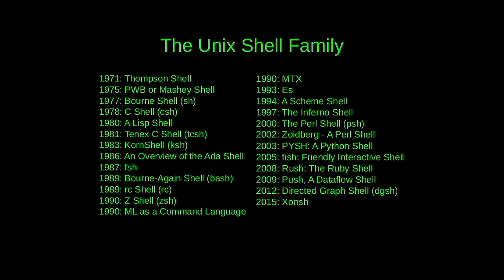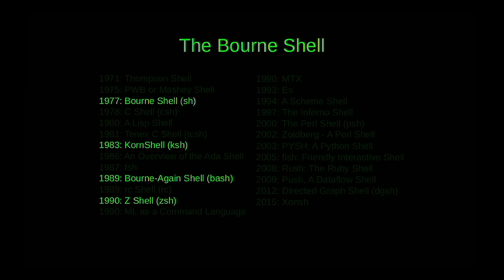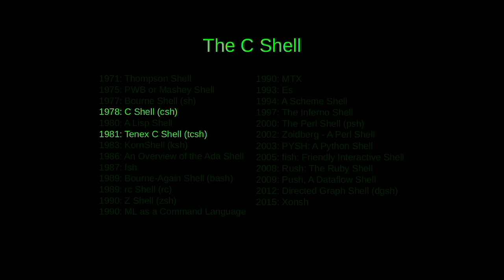This is a list of fairly distinct shells over the last 45, almost 50 years, starting with the original Thompson shell. I haven't included work-alikes like the public domain Korn shell or the Debian Almquist shell. These are either continuations of their line or fairly distinct from each other. Looking at this set of shells, it breaks down into four main families — especially the successful shells. There's the Bourne shell, which is arguably the most popular. The Bourne-again shell in particular is so popular that many people refer to it as Bash and Bash as the Unix shell.